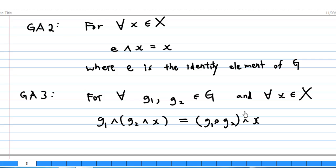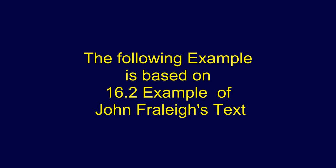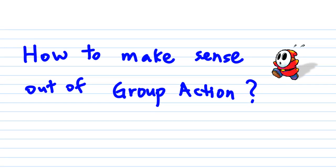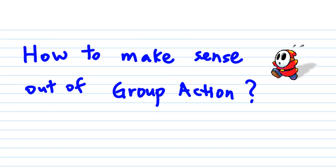These are the three axioms for group action of G on X. Well, after I tell you what is the definition of group action on a set X, how to make sense of a group action?